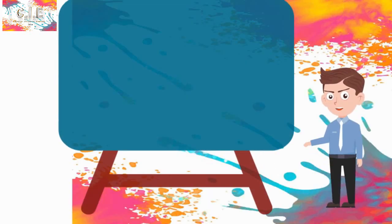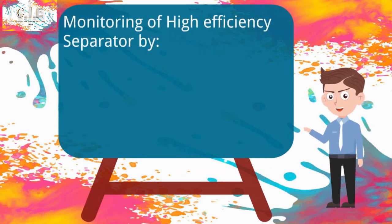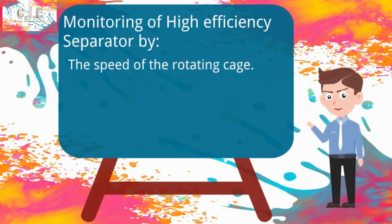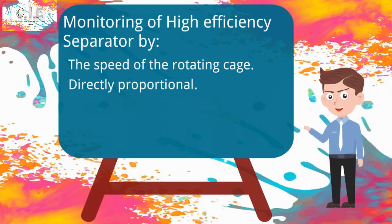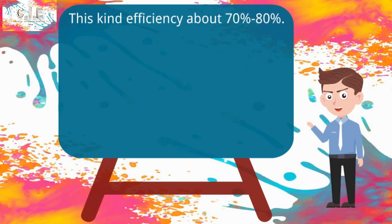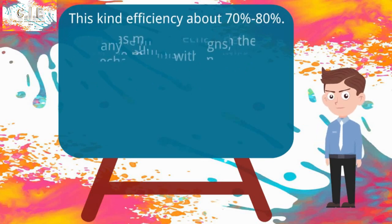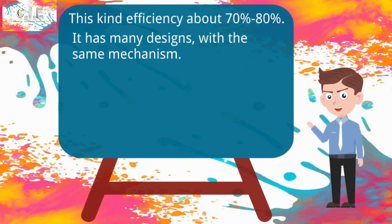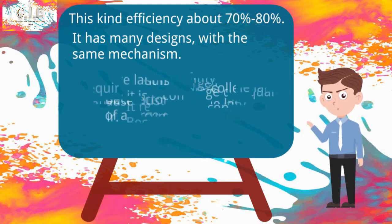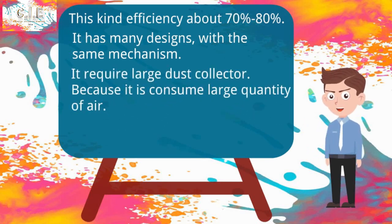The fineness of the products can be controlled by the speed of the rotating cage. Increasing the speed will increase the fineness. Its efficiency is about 70 to 80 percent. This type of separator has many designs but all use the same mechanism. High efficiency separator uses high quantity of air so it needs large dust collectors.